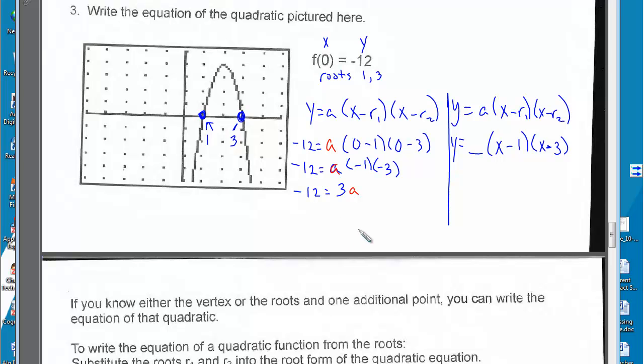And a is equal to negative 12 over 3, which is negative 4. So here is the equation written in root form given a point, 0, negative 12, and the roots, 1 and 3.